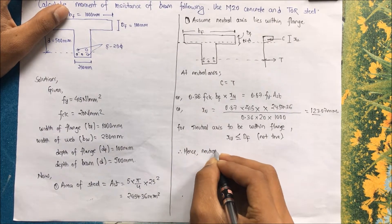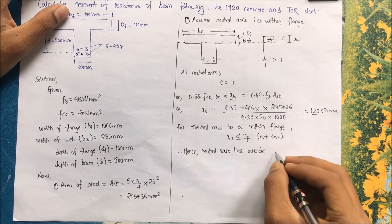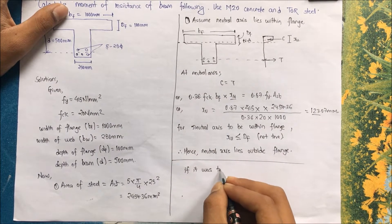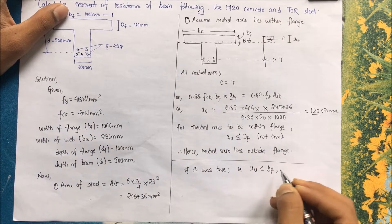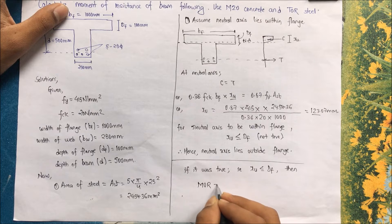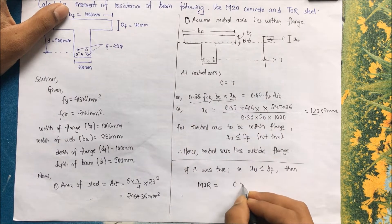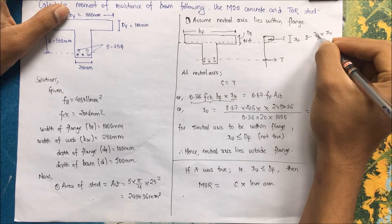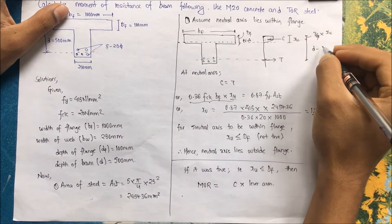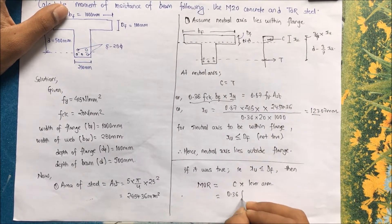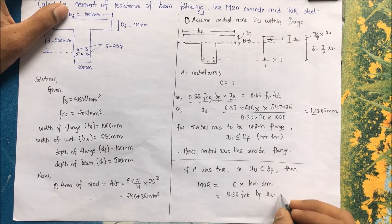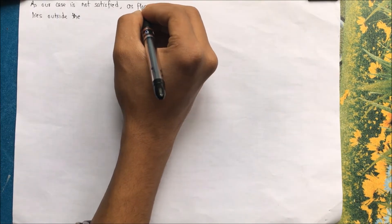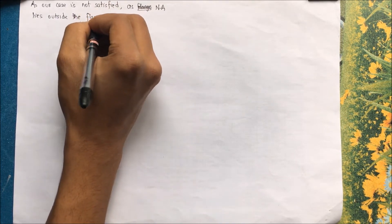The conclusion is that the neutral axis lies outside the flange. Just for clarity: if the assumption had been true and the neutral axis lay within the flange, the moment of resistance would be calculated as compressive force C times the lever arm. The rectangular portion extends to 3/7 × XU, and the lever arm would be D minus 0.42 × XU. Since this case is not satisfied, as the neutral axis lies outside the flange, we move on.